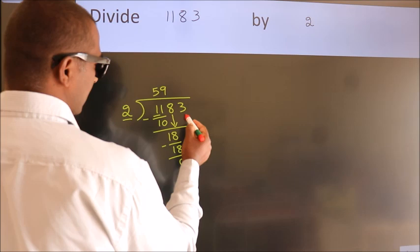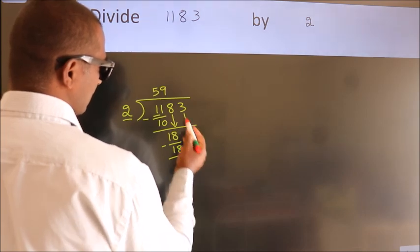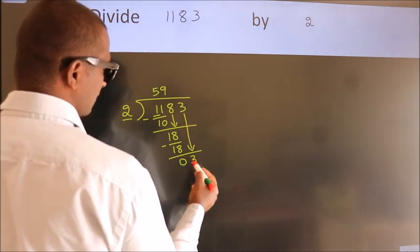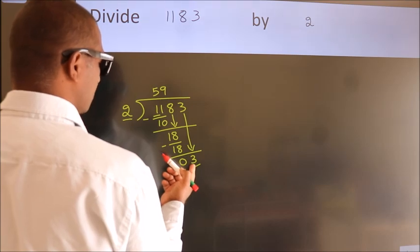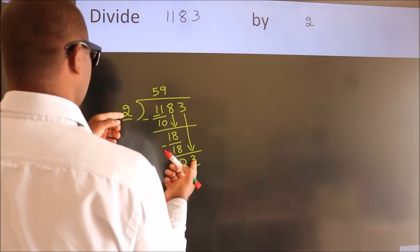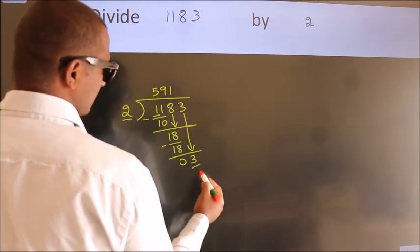After this, bring down the beside number. So, 3 down. So, 3. A number close to 3 in the 2 table is 2 times 1 equals 2.